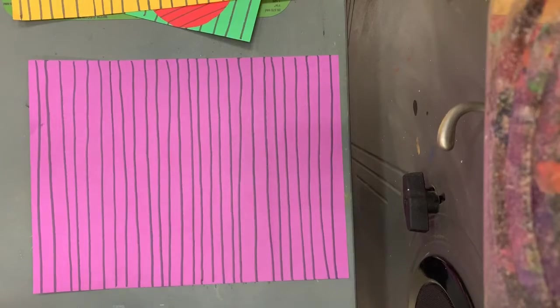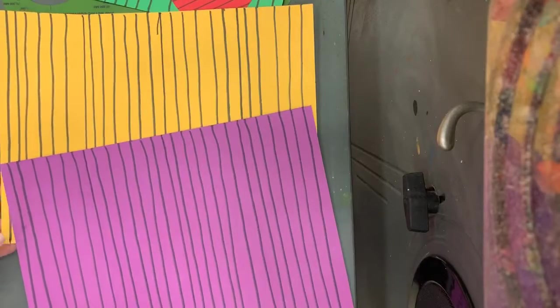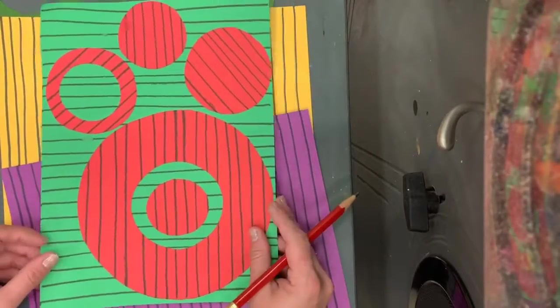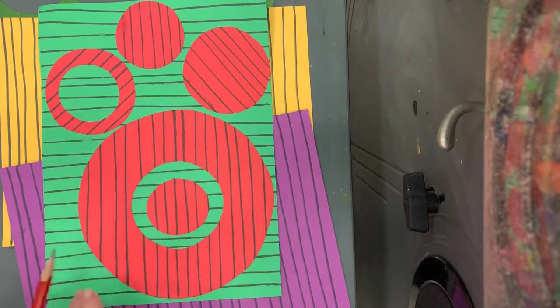All right, here we go. So now I have my two pieces of paper, my complementary colors, and I have drawn on my lines. And now we are going to start making our circles and arranging them on our paper like Sol LeWitt did.